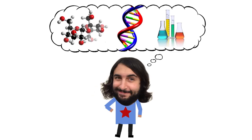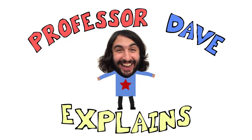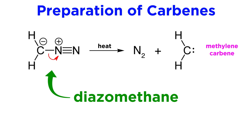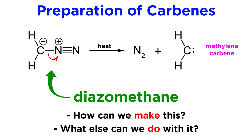Professor Dave Explains. For the past few tutorials we've learned about carbenes, and we saw that a very common method of carbene formation is through the decomposition of diazomethane. Because of this, it will be useful to know how diazomethane can be synthesized, and it will also be worth our while to examine some other applications for this compound.